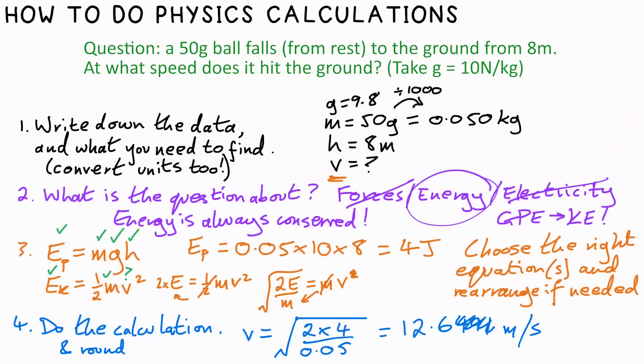You could instead replace the symbols in the equation with numbers and then rearrange, and you'll end up with the same answer. But doing it this way is better. You might see there is a shortcut in this question, but I've gone around the houses to show you how to do it properly. I've also done a video specifically on how to do any electricity calculation. Check it out. Leave a like if this has been helpful and I'll see you in the next video.